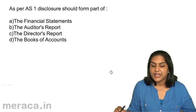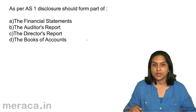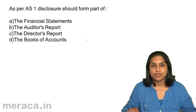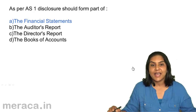As per Accounting Standard 1, disclosure of accounting policies should form a part of — A. Financial statements, B. The auditor's report, C. The director's report, or D. The books of accounts. Disclosure of accounting policies should form part of the financial statements. The correct answer is A.